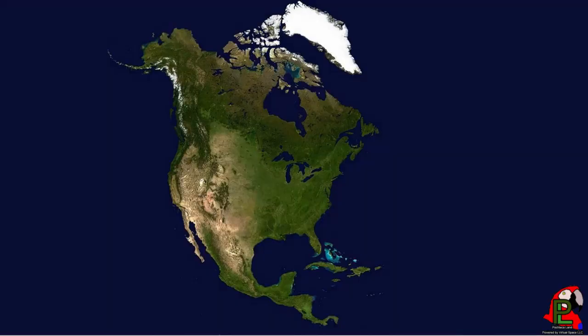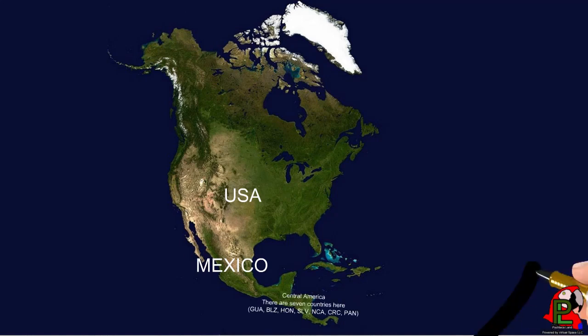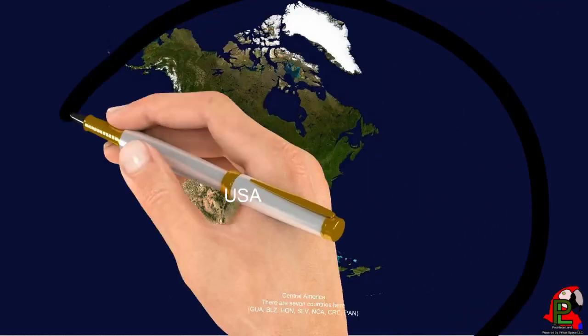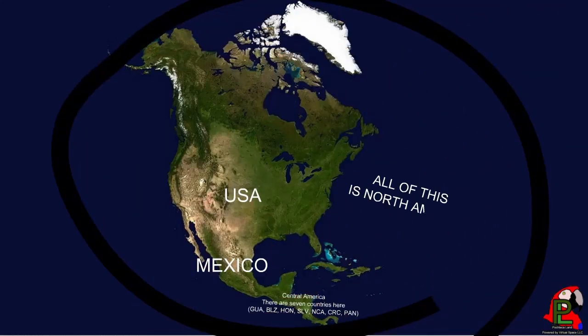Here is a basic geography review of Mexico. Most people will know that Mexico is the United States of America's southern neighbor. However, Mexico often gets mistaken and categorized as being part of Central America. It's not. Both are two separate places that are part of the North American continent.